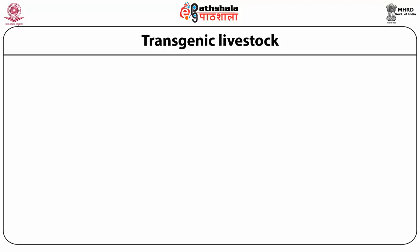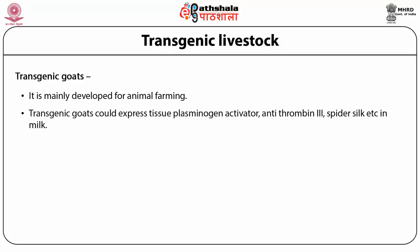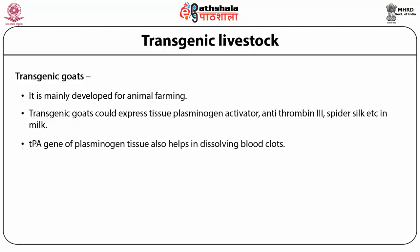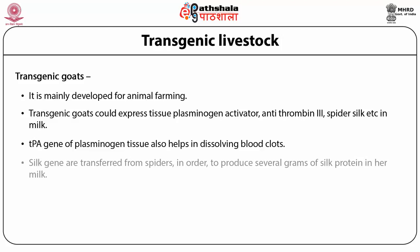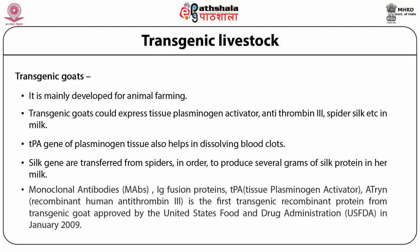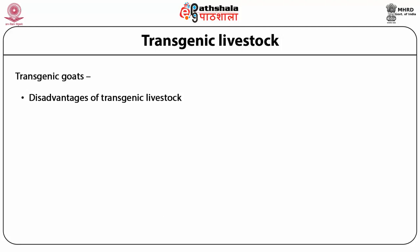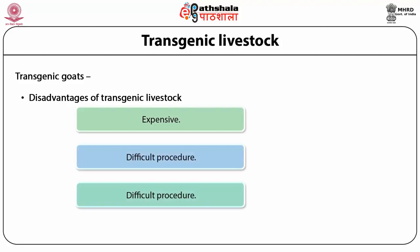Transgenic sheep: Tracy was the first transgenic animal to produce recombinant protein in its milk. It was used for good quality wool production and can serve as a model organism to study immunology, human blood clotting factors, transplantation, hematology, biological product manufacturing, and recombinant DNA and drug production in milk. Transgenic goats are mainly developed for animal farming and can express tissue plasminogen activator, antithrombin, and spider silk in their milk. The TPA gene helps in dissolving blood clots. Silk genes transferred from spiders allow production of grams of silk protein in goat milk. Antithrombin is the first transgenic recombinant protein produced from transgenic goats. Disadvantages of transgenic livestock: expensive, difficult procedure, and failed in vitro production.